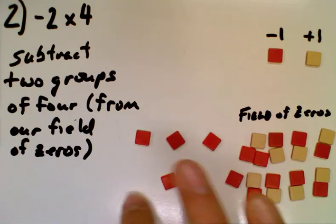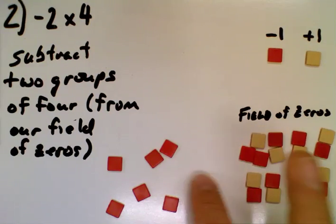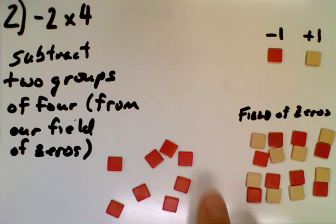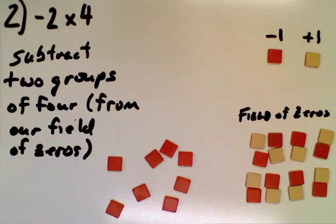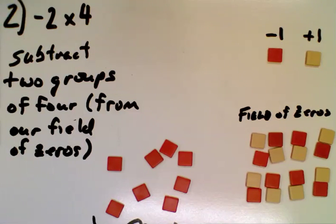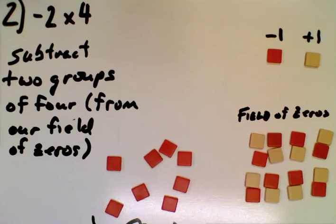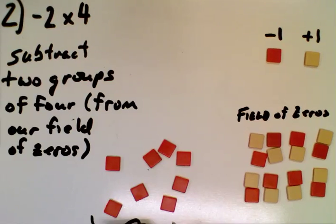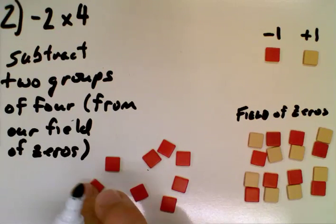And so what do we have left? We have 1, 2, 3, 4, 5, 6, 7, 8 of the negative tiles left out of our field of zeros. And so our answer is negative 8. Let's write that a little bit here. So negative 8.